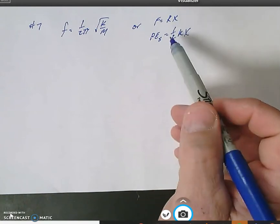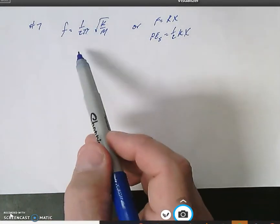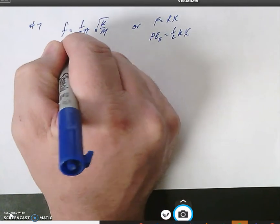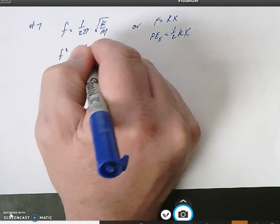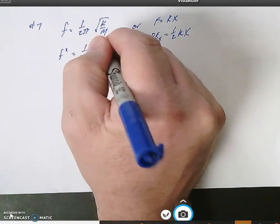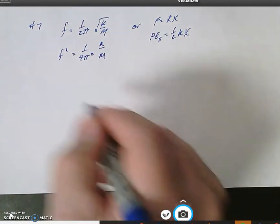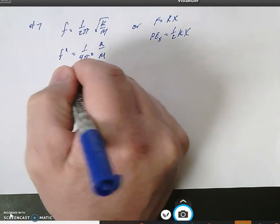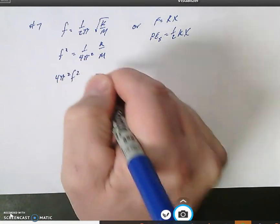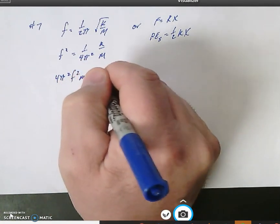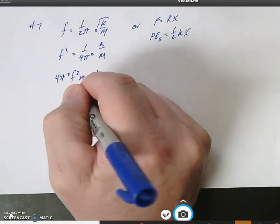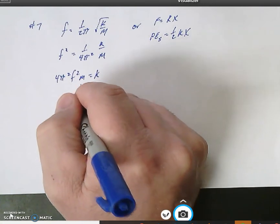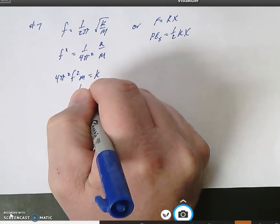But we do have information here. So algebraically, if we square everything, we can get f squared equals one over four π squared, then k over m. We're looking for k, so four π squared f squared m is equal to k. Where the mass is going to be 50 grams, which is 0.05 kilograms.